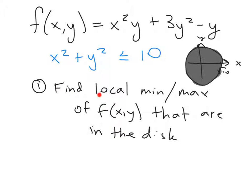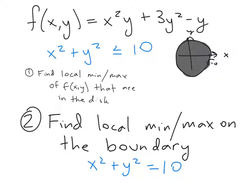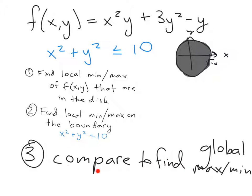Our approach to finding the extrema involves three steps. First, find the local minima and maxima of the function within the disk. Second, find the local minima and maxima that lie on the boundary curve x² + y² = 10 — the highest and lowest values the function attains on the edge of the disk. Third, compare all these values to find the global maxima and minima.